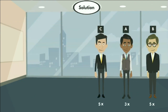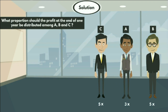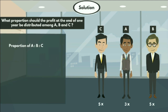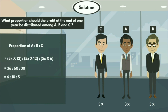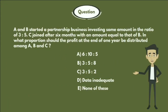The question asks in what proportion should the profit at the end of one year be distributed among A, B, and C. So the proportion of A to B to C equals 3x × 12 to 5x × 12 to 5x × 6. After solving this we get 6 to 10 to 5. So the answer is option A: 6 to 10 to 5.